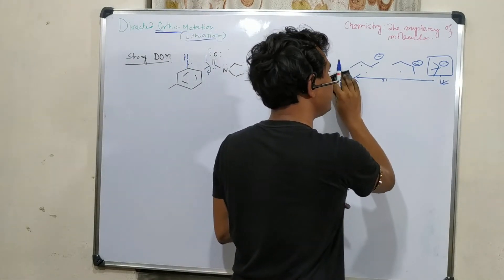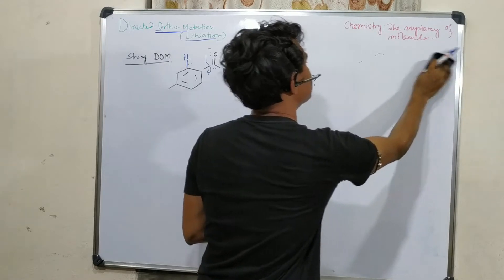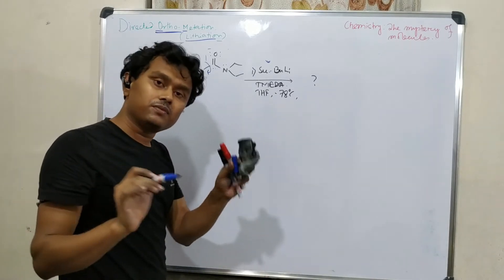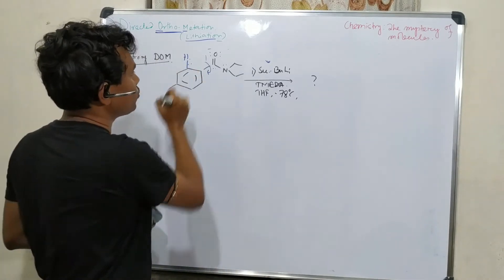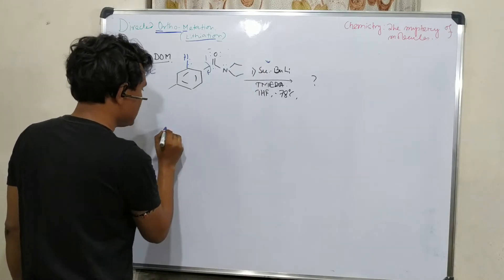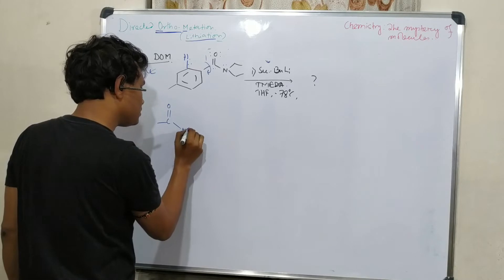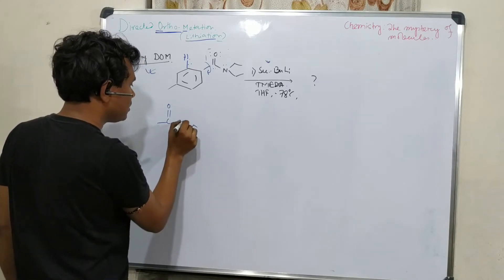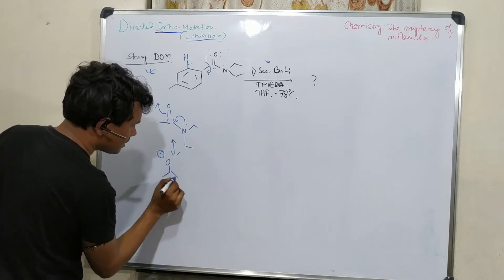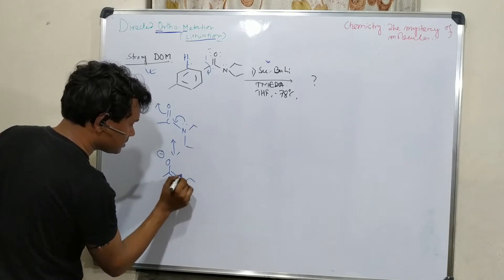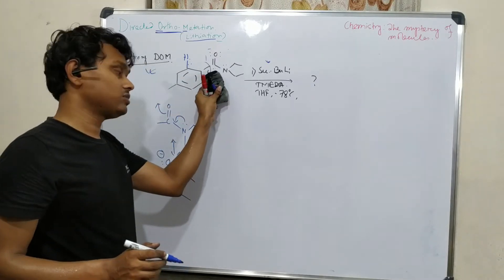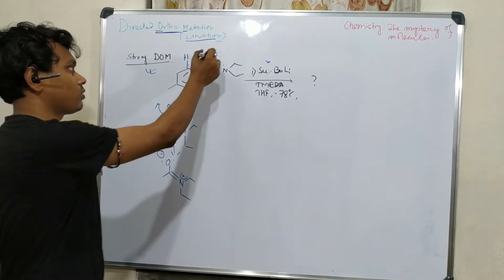The main reason for choosing TMEDA is its coordination, which breaks the aggregates of the lithium reagent and produces a more reactive butyllithium reagent. Regarding strong directed ortho-lithiation — if we check the resonance of the directing group, the lone pair donates, and the canonical form shows O-minus double bond N, which is a charge-separated contribution. The overall electron distribution will be less, but it signifies stronger coordination.